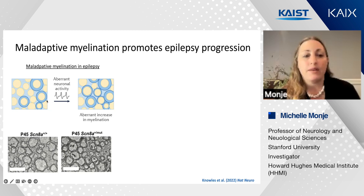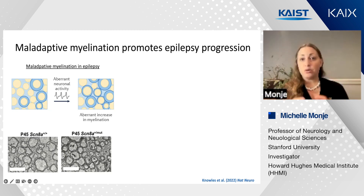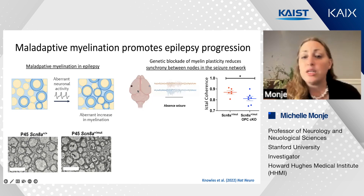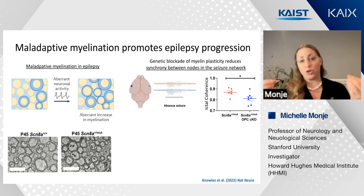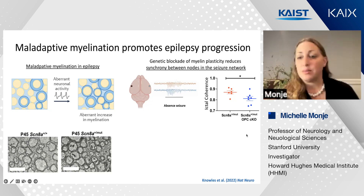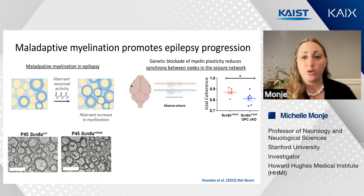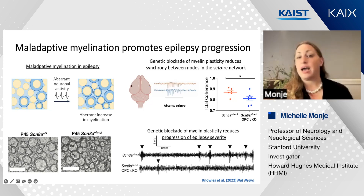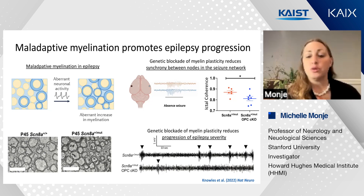We find that after the initiation of the seizure syndrome, there is an increase in myelination—both G ratio, reflecting the thickness of the myelin sheath, as well as the number of myelinated axons. If we measure the interictal coherence between different nodes within the seizure network, we find that blocking activity-dependent myelination by conditionally deleting the TrkB receptor from oligodendrocyte precursor cells decreases the synchrony between nodes in the seizure network. Since epilepsy is a disease of hypersynchronization, we find that the increase in seizure frequency can be prevented by preventing adaptive myelin changes.